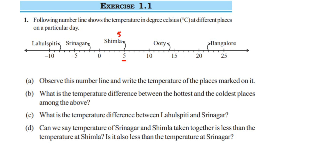Shimla is marked at 5, so Shimla's temperature is 5 degrees Celsius. Ooty is marked further along — counting: 10, 11, 12, 13, 14 — so it is 14 degrees Celsius. Bangalore is at 20, 21, 22, so it is 22 degrees Celsius. On the left side, negative numbers start immediately after zero. Srinagar is at minus 2 degrees Celsius, and Lahuspith is at minus 4, minus 5, minus 6, minus 7, minus 8 — so minus 8 degrees Celsius.